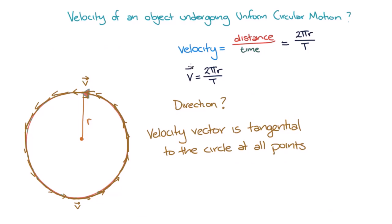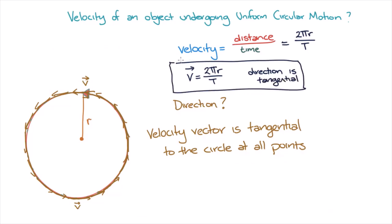In summary, the velocity of an object undergoing uniform circular motion has a magnitude of 2πr on T, and the direction of the velocity is tangential to the circle on which the object is undergoing uniform circular motion.